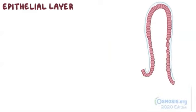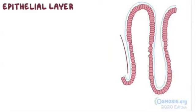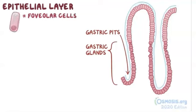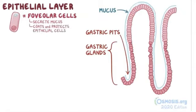The epithelial layer dips down below the surface of the stomach lining to form gastric pits, and these pits are contiguous with gastric glands below, which contain various epithelial cell types, each secreting a variety of substances. For example, foveolar cells, or surface mucus cells, secrete mucus, which is a mix of water and glycoproteins that coats the stomach epithelial cells. With all of these digestive enzymes and hydrochloric acid floating around, the stomach and duodenal mucosa would get digested if not for this mucus which coats and protects the epithelial cells.